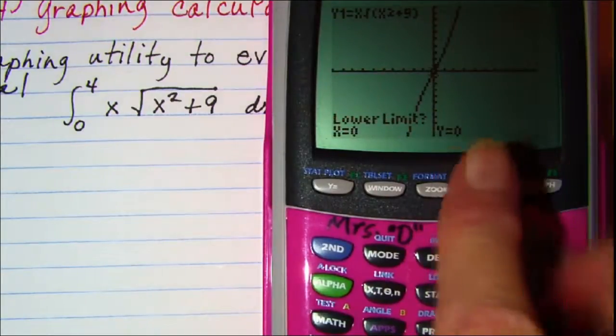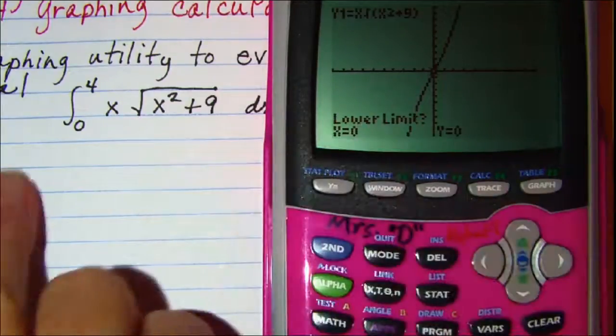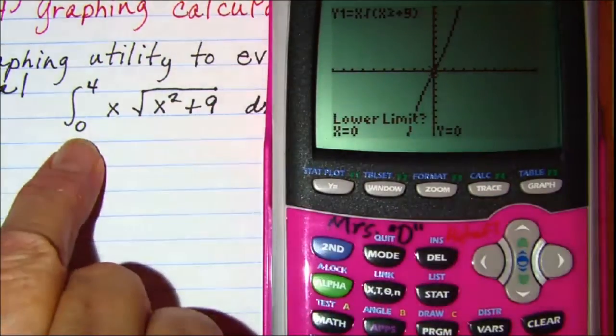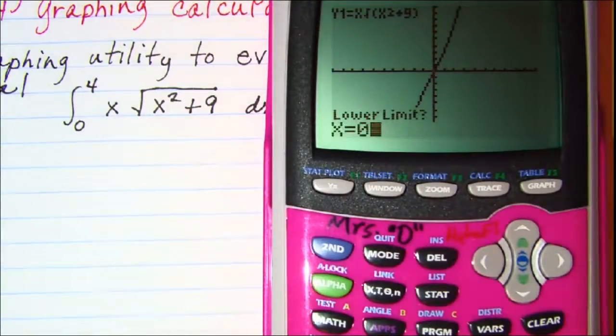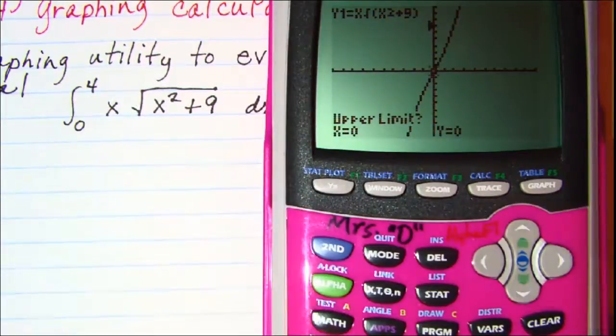The first thing asked for is the lower limit. We know our lower limit is 0, so press 0 and then enter. The upper limit is 4, so press 4 and enter.